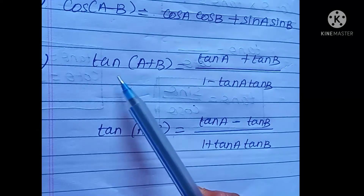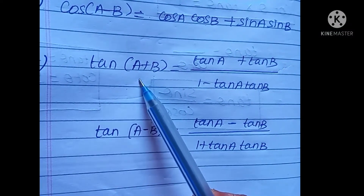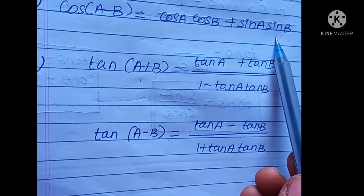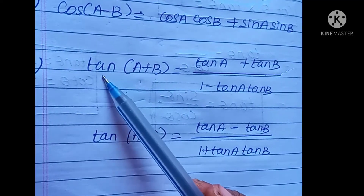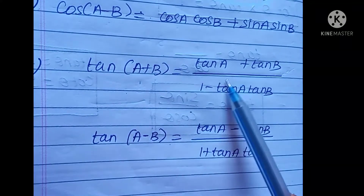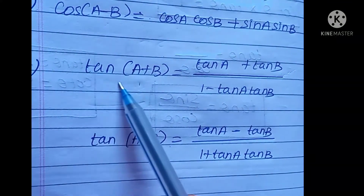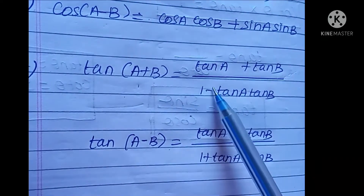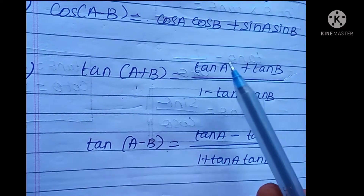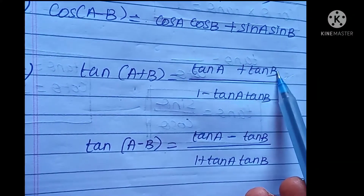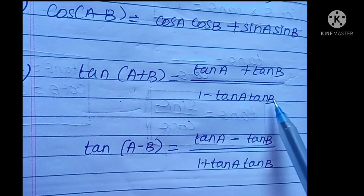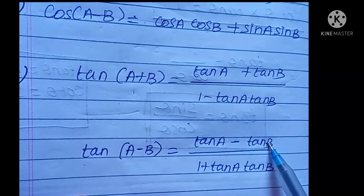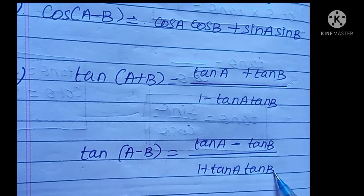The next formula is tan(A+B) = (tanA + tanB) divided by (1 − tanA tanB). And tan(A−B) = (tanA − tanB) divided by (1 + tanA tanB).